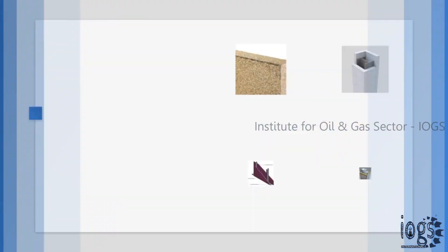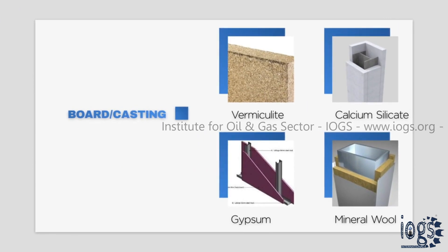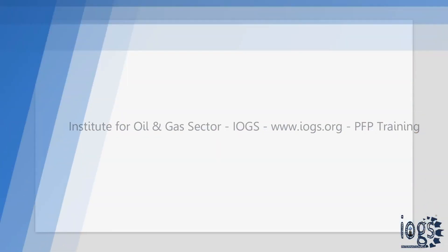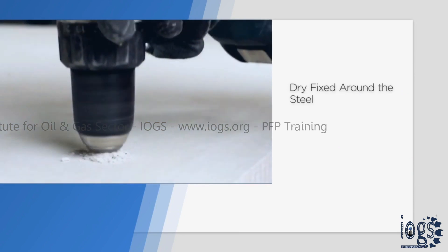The board or casting method of fire protection works in the same way as cementitious fireproofing, and is dry fixed around the steel.